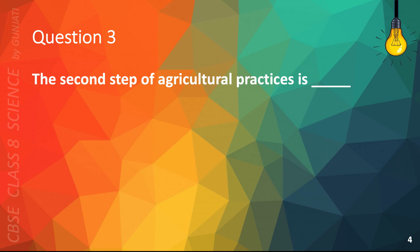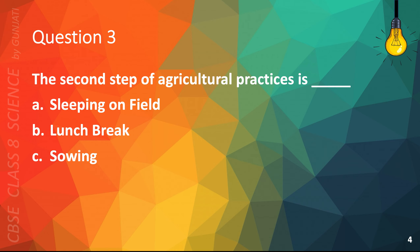Question 3. The second step of agricultural practices is: A. Sleeping on field, B. Lunch break, C. Sowing, or D. Harvesting. The correct answer is C. Sowing.